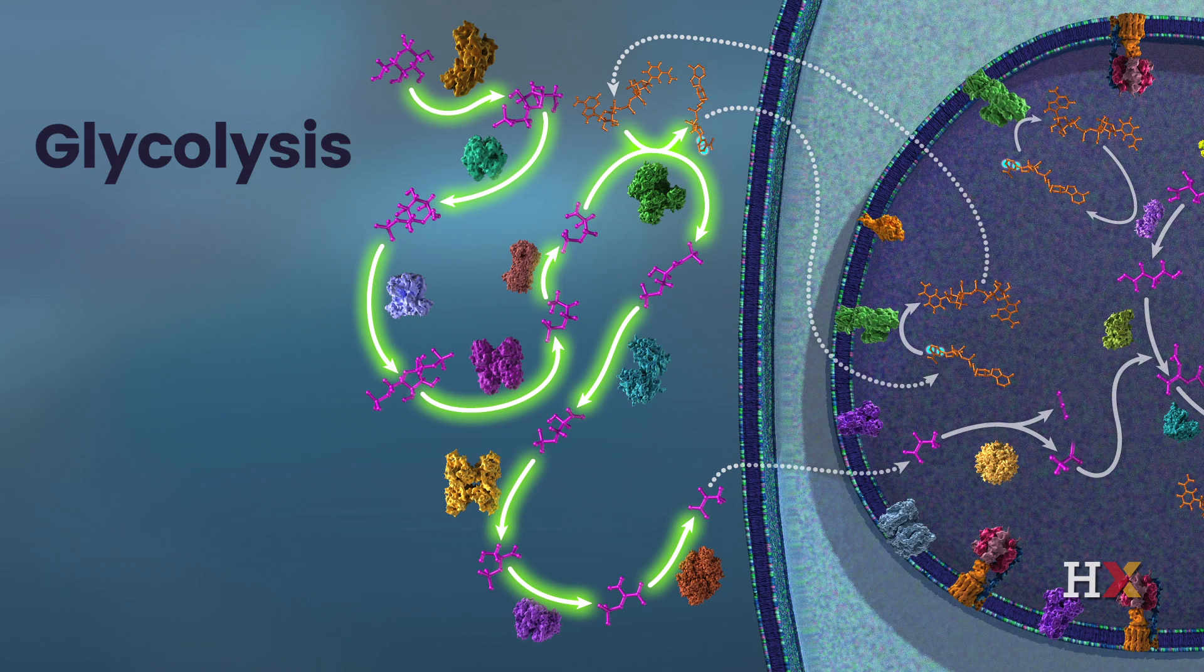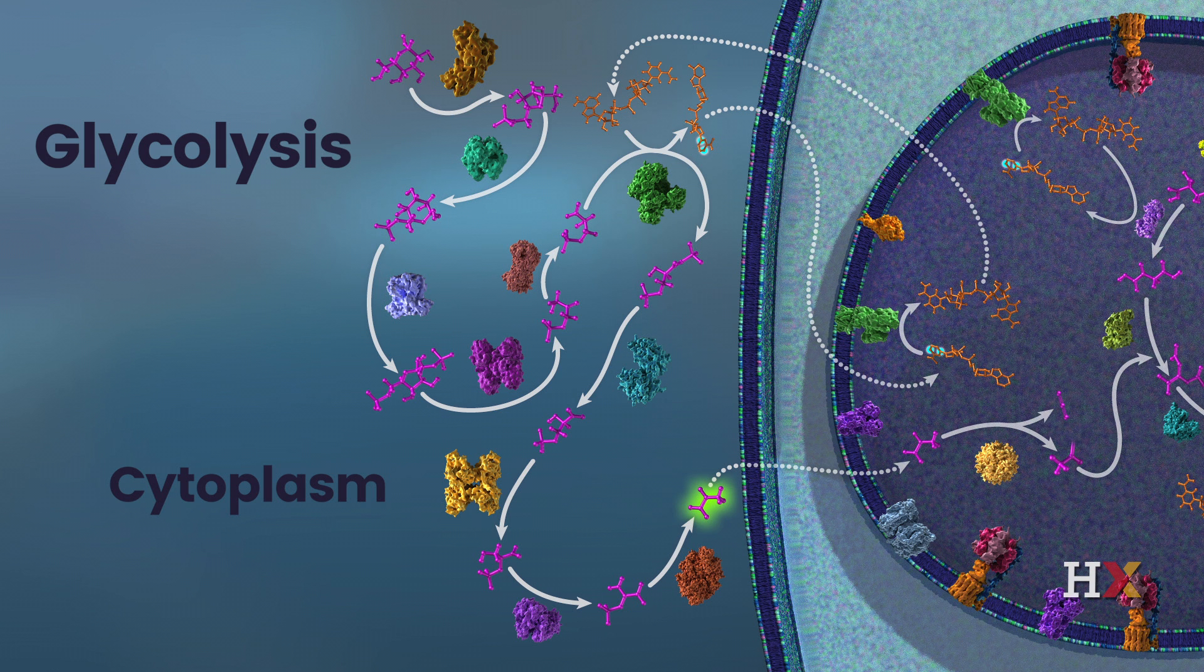We know by now that glycolysis takes place in the cytoplasm and leads to the formation of two molecules of pyruvate per molecule of glucose.